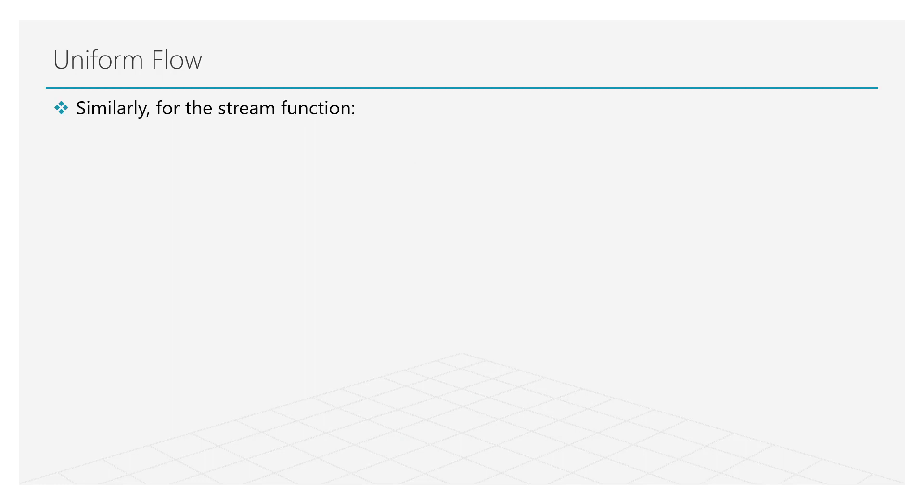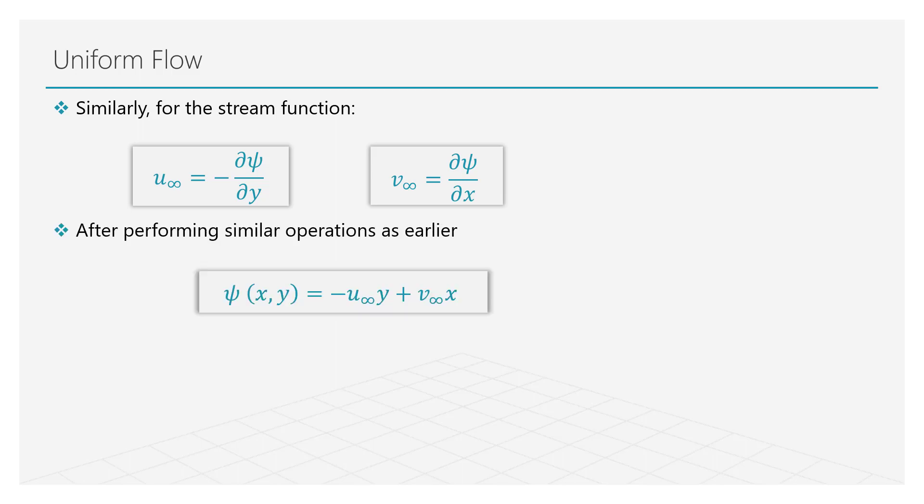In a similar fashion, based on the definition of the stream function, we have the following relations that relate the velocity components to the gradients of the stream function. I will let you work it out yourself, but after integrating, comparing and substituting, we obtain the governing equation for the stream function for this uniform flow field.